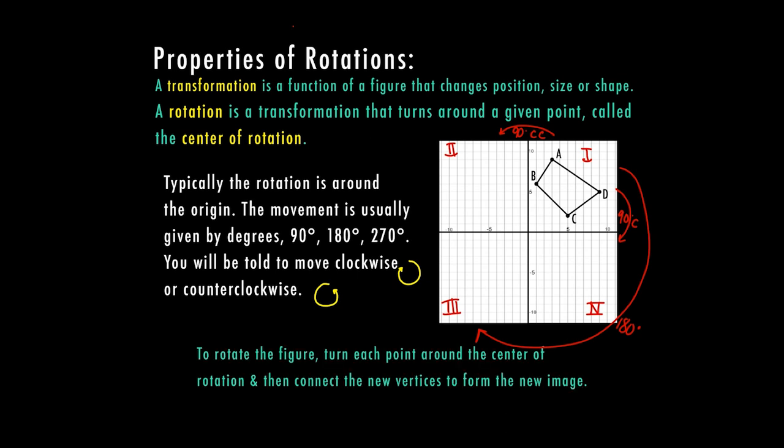So to rotate the figure, we're going to turn each point around the center of rotation and then connect the new vertices to form the new image. So what I'm going to do, I'm going to move my entire shape 90 degrees clockwise.